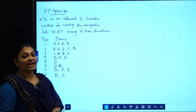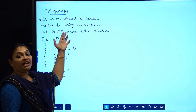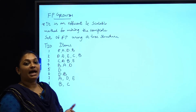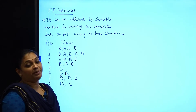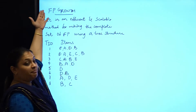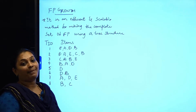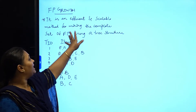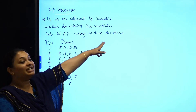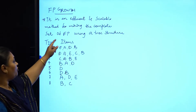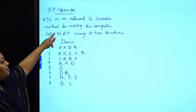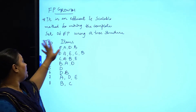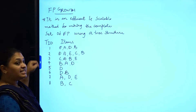The next topic in your second unit is the FP Growth Algorithm. In the previous session we covered the Apriori Algorithm, and now we are going to study the FP Growth Algorithm. FP stands for Frequent Pattern — it is an efficient and scalable method for mining the complete set of frequent patterns using a tree structure.